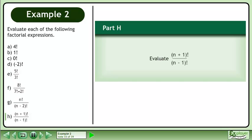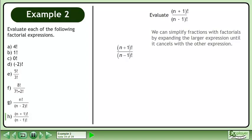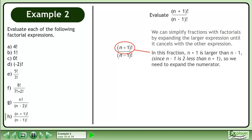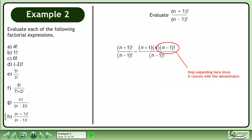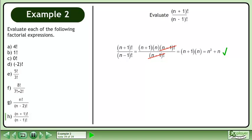In Part H, evaluate n-1 factorial over n-1 factorial. We can simplify fractions with factorials by expanding the larger expression until it cancels with the other expression. Expand the numerator until we have a term that matches the denominator. Stop expanding where it cancels with the denominator. Cancel to get n-1 times n. Multiply to get the answer.